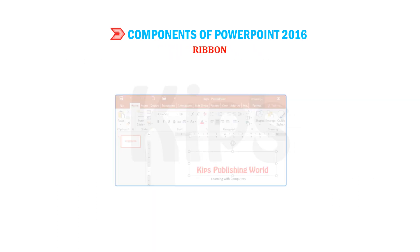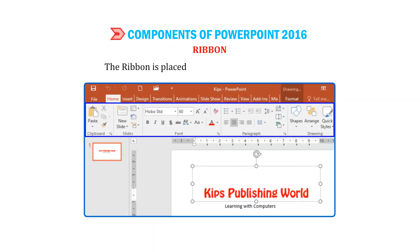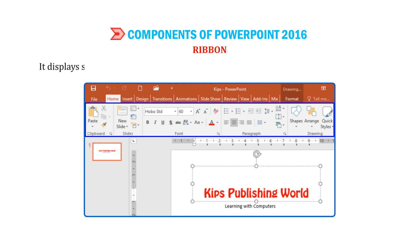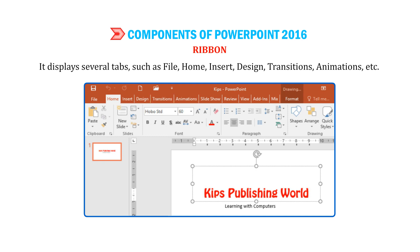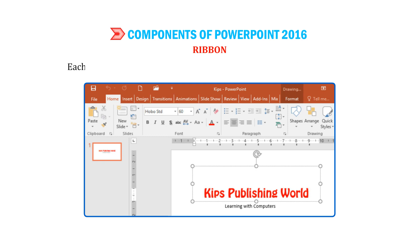Ribbon: The ribbon is placed at the top area of the document. It displays several tabs such as File, Home, Insert, Design, Transitions, Animations, etc. Each tab contains commands which are organized into different groups.